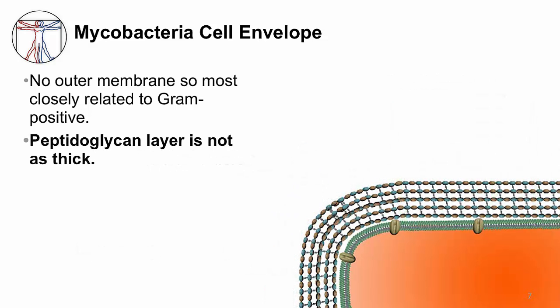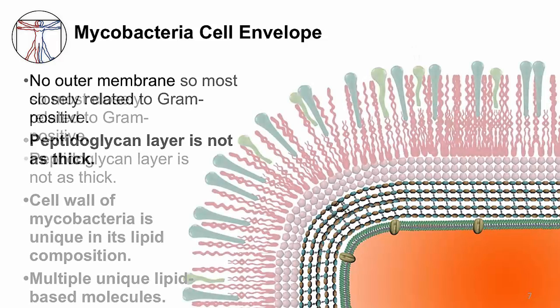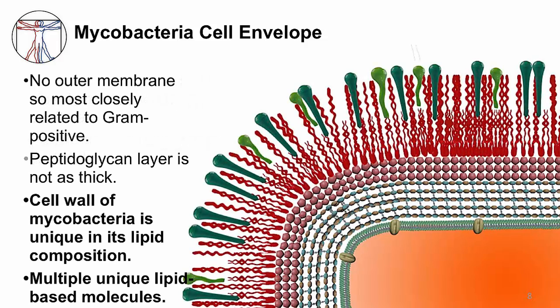In contrast to gram-positive bacteria, the peptidoglycan layer of mycobacteria is not as thick, as you can see in the figure. The most unique characteristic of the mycobacteria cell envelope is its lipid composition. Multiple, unique, lipid-based molecules compose a large part of the cell envelope, creating a thick, waxy coat.